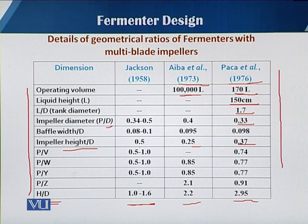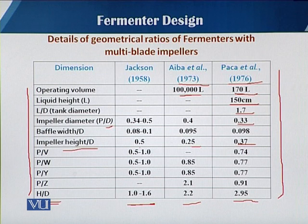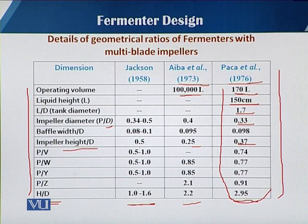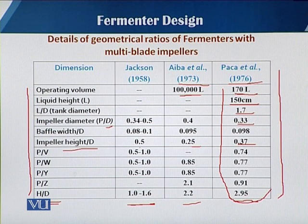Across all three models, Pekka et al reported all kinds of geometrical ratios, making it the most comprehensive report. By using these different geometrical ratios for multi-impellers, we can design a fermenter of any capacity — whether 200,000 liters or 100 liters.